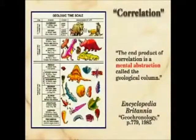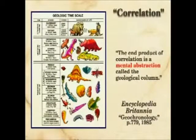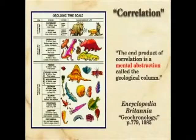So instead of digging down and finding it in any one place, you find some over here and some over there and you tie it together and correlate the layers — not based on what you see in any one place. As the Encyclopedia Britannica says, the end product of correlation is a mental abstraction called the geologic column. You don't get that impression in the undergraduate earth science textbooks. That is a shame. But this is not concrete — it is a mental abstraction that is built together.